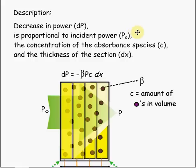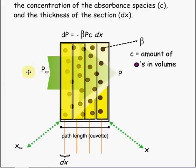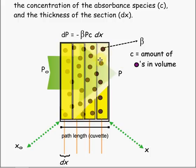Here's a description of what goes on in Beer's Law. The decrease in power, dP, is proportional to the incident power P-naught, the concentration of the absorbent species C, and the thickness of the section dX. I have a diagram here that shows the initial power P-naught. The absorbing medium is this entire rectangular shape, and the yellow rectangular bars decrease to indicate the decrease in power.